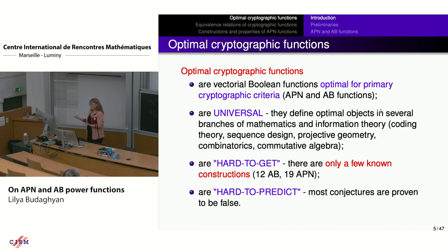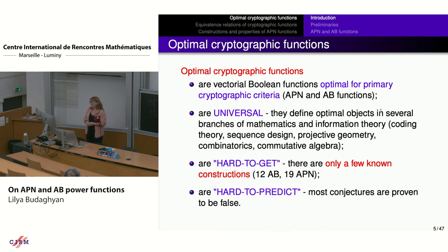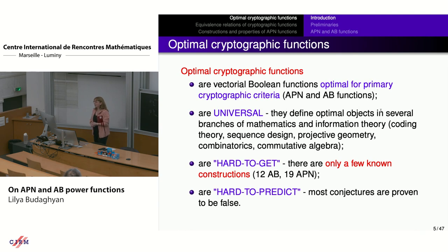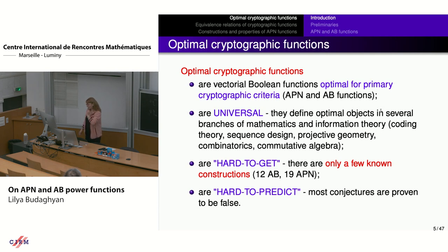There is also a negative side: these functions are hard to get. There are just a few known constructions. In particular, for AB functions there are 12, and for APN functions there are 19. If we restrict to power functions, there are only four AB cases and only six APN. They are also hard to predict — almost all conjectures about these objects have been disproven.